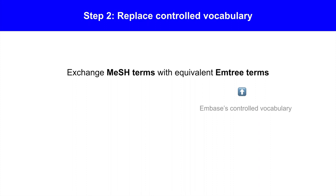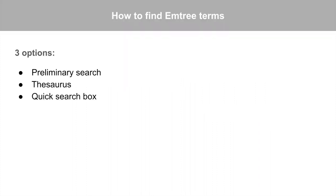Step 2: Replace the controlled vocabulary terms. Exchange the strategy's MeSH terms with their equivalent EmTree terms. EmTree is Embase's controlled vocabulary system. To find a MeSH term's corresponding EmTree term, there are three options.